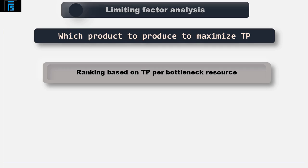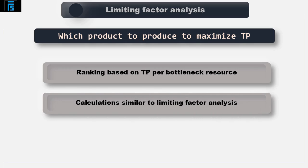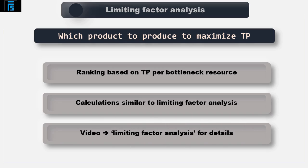The product with the highest throughput per bottleneck resource should be produced first, followed by the product with the next best throughput per bottleneck resource, and so on until the bottleneck has been utilised in full. For more information on limiting factor analysis please see the video covering this topic. There are also some numerical examples within an article on throughput accounting on the ACCA website that help support this video.